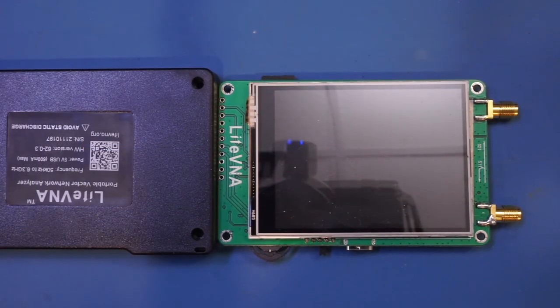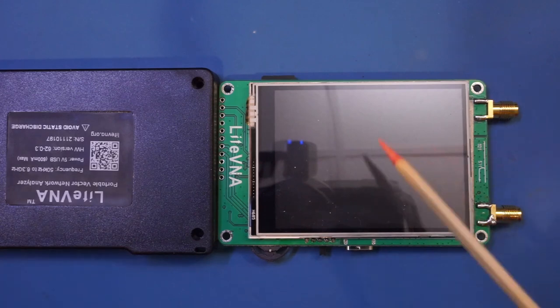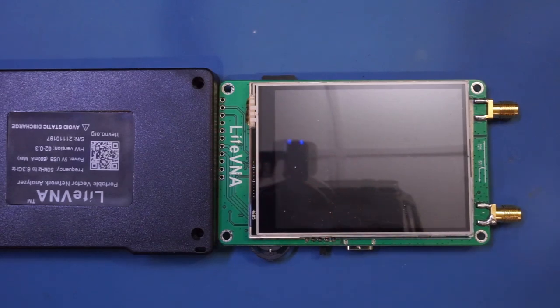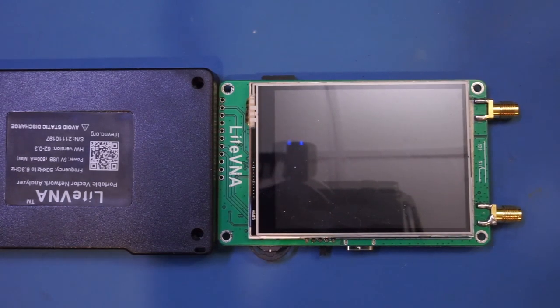The front side is just the LCD, there's not much else to see. You can see the touch screen overlay here, and clearly it is a four-wire resistive touch screen. Now let me flip it over so we can see the other side.